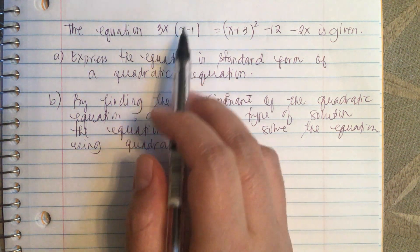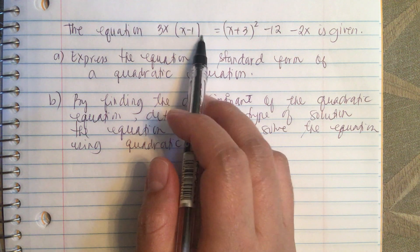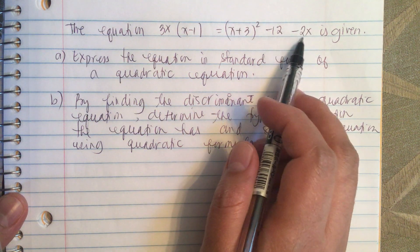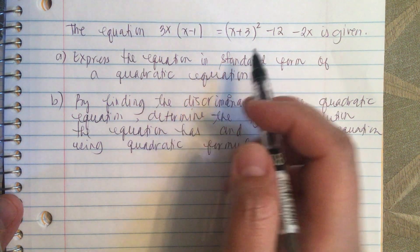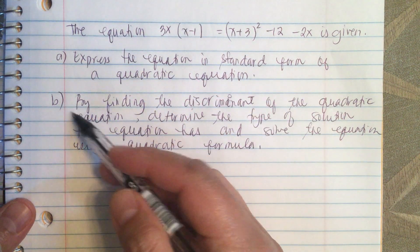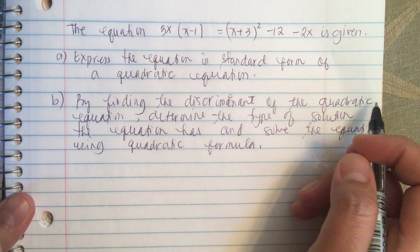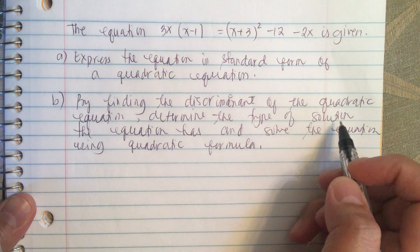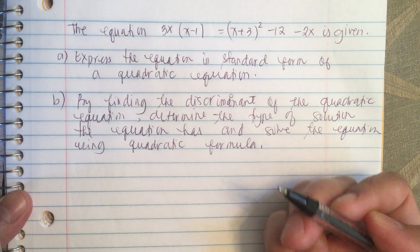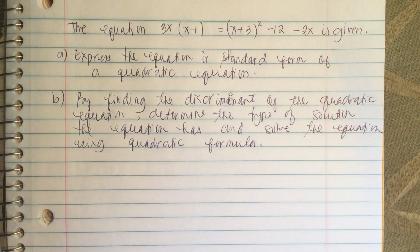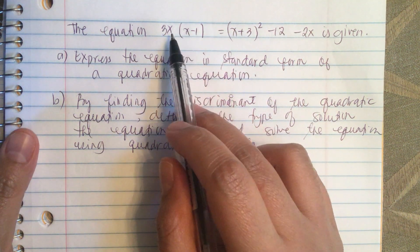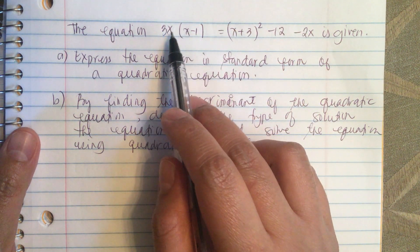The equation 3x times (x minus 1) is equal to (x plus 3) squared minus 12 minus x is given. Express the equation in standard form of a quadratic equation, and by finding the discriminant of the quadratic equation, determine the type of solution the equation has, and solve the equation using the quadratic formula.